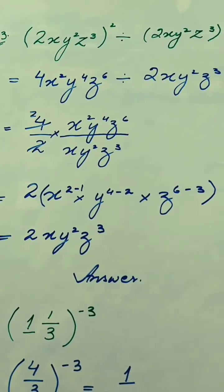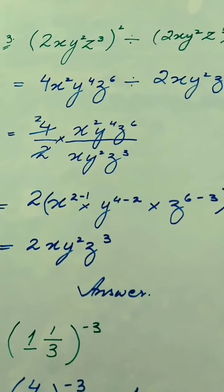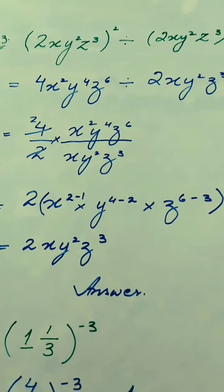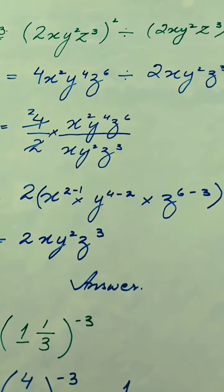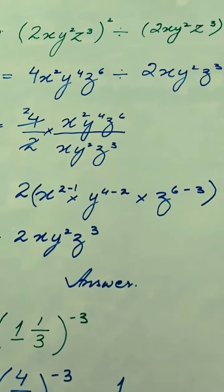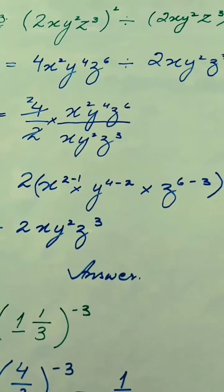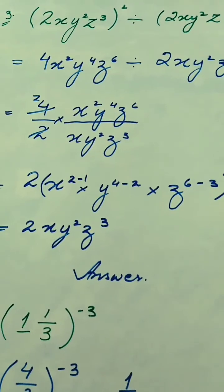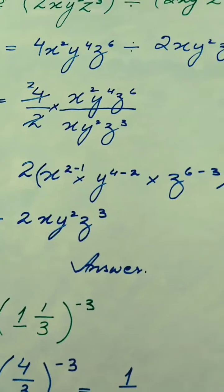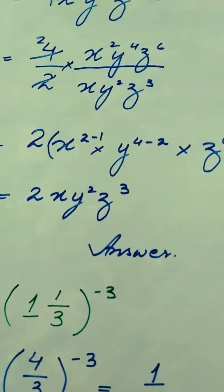Now look at another question in which there is a division function. First we will solve the power on the whole bracket. The question becomes 4x squared y raised to the power 4, z raised to the power 6, divided by 2xy squared z cubed. Now dividing constants with each other we get 2. In the case of division, the power on the variable subtracts — we subtract the power in the denominator from the power in the numerator.